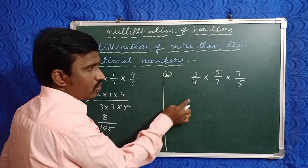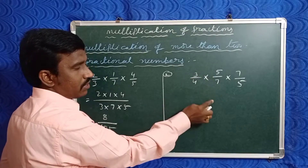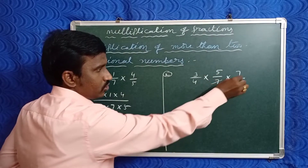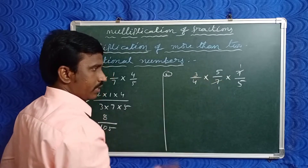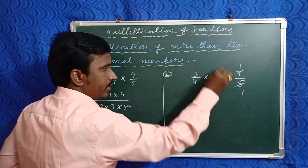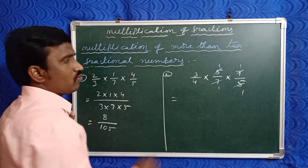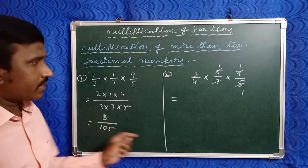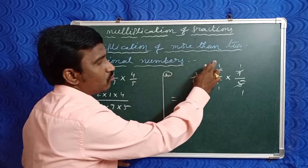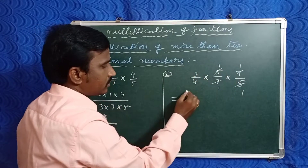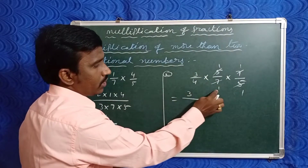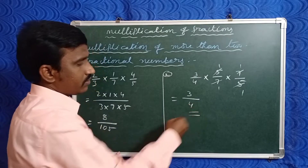Second example: three by four into five by seven into seven by ten. Seven and seven both cancel. Then five and ten cancel: five ones are five, ten twos are ten. So remaining numerators: three, one, and one — three into one into one means three. Denominators: four into one into one means four. So three by four is our product.